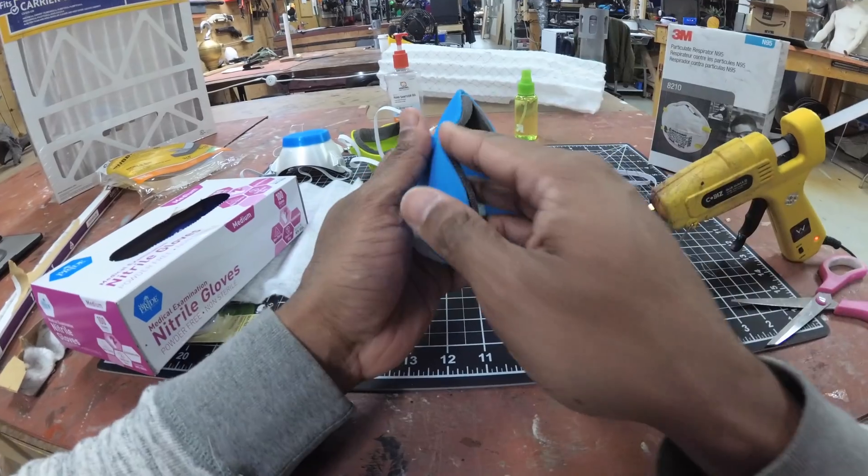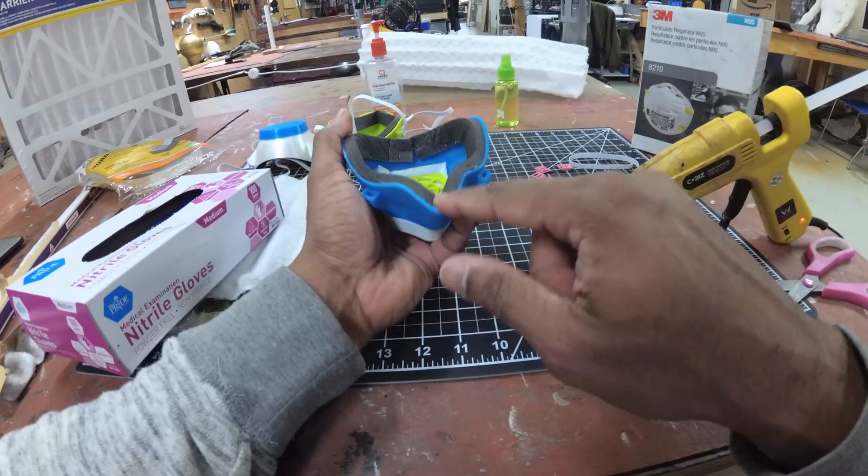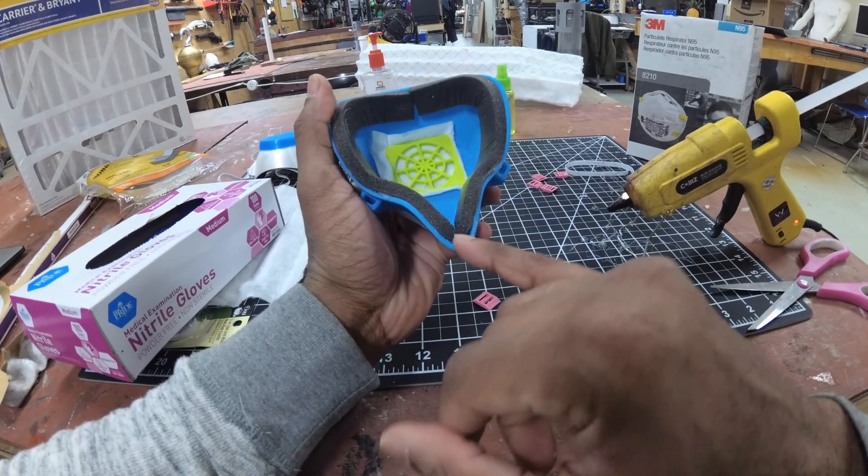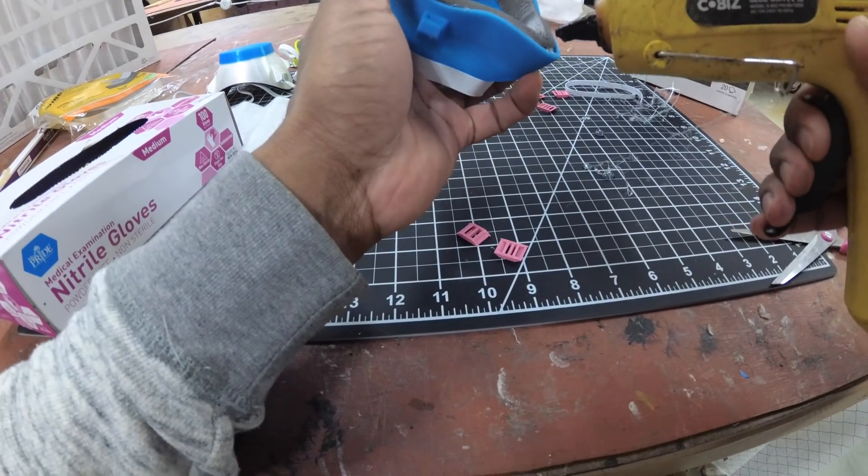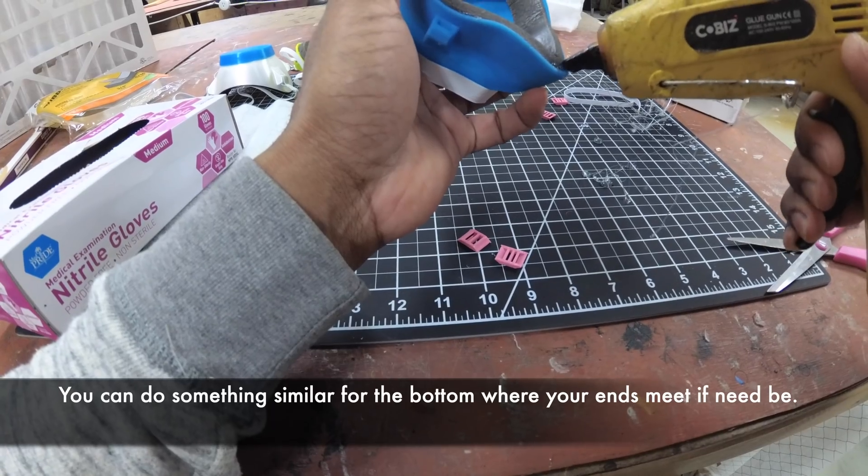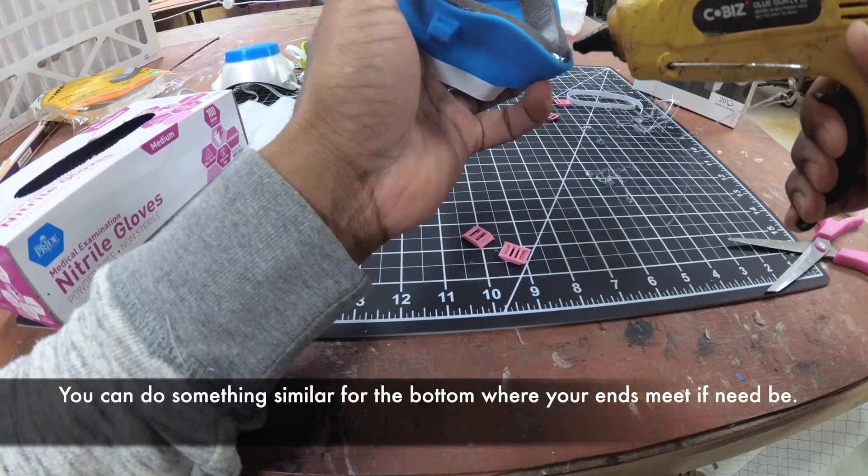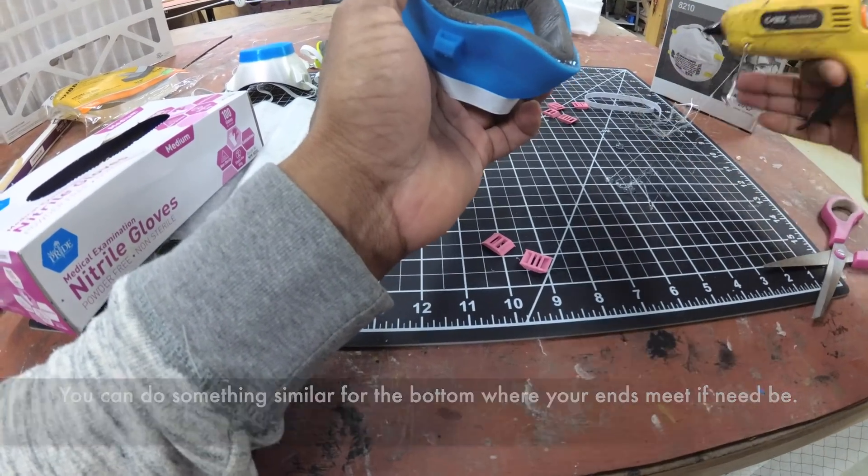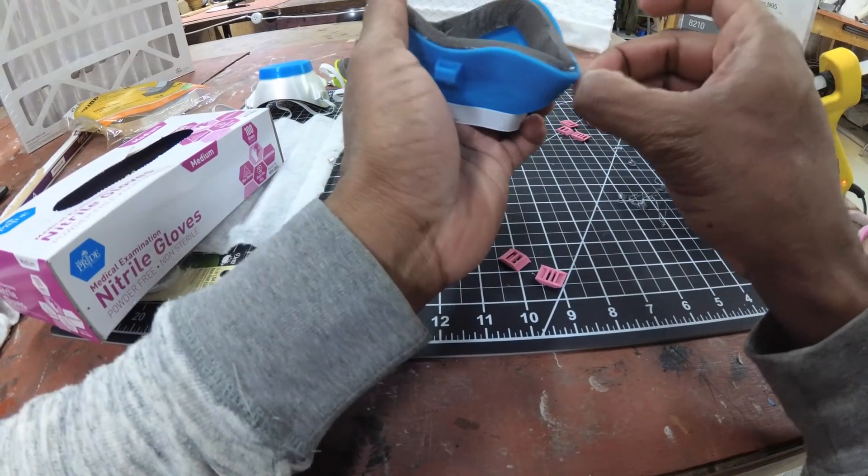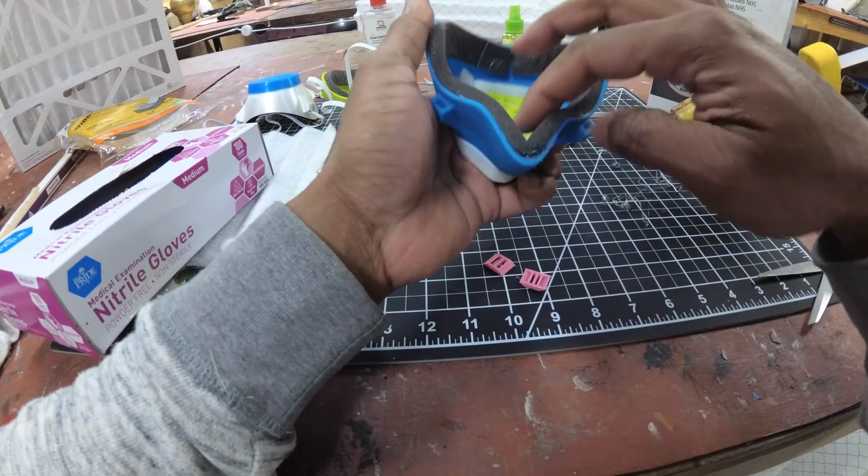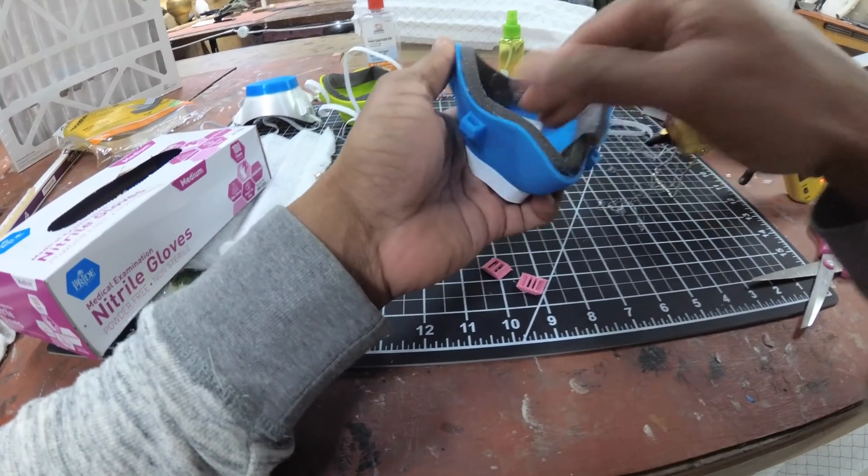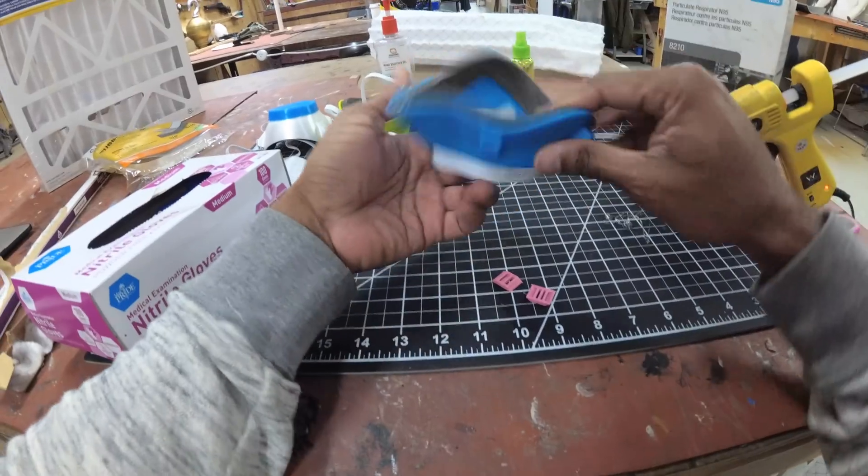Once you're done putting your strip all the way around, just remember to go back in and pull a little bit of hot glue here. Depending on how well you actually got this part in, you might want to seal this up a little bit because that is the area that we've discovered where we end up with some leakage. You want to reinforce the bridge of the nose there a little bit.